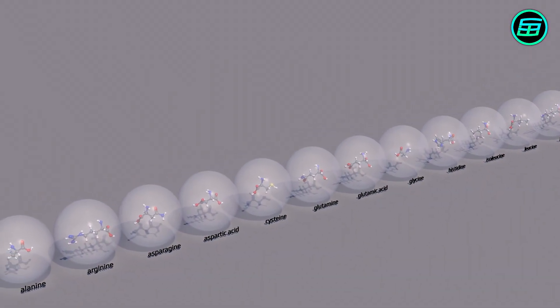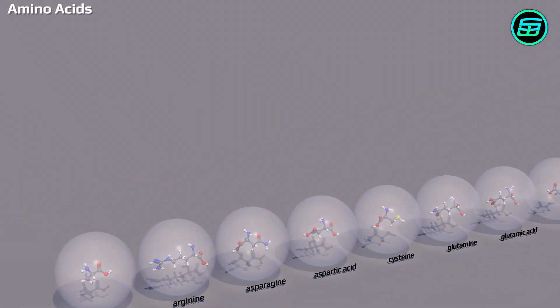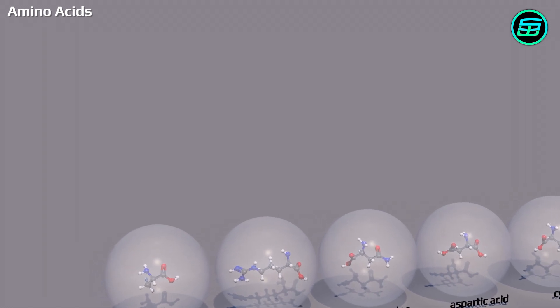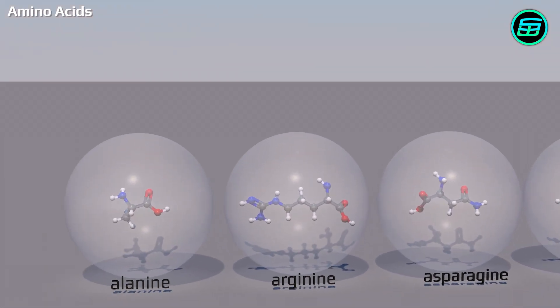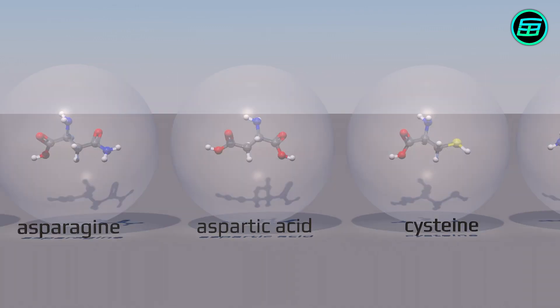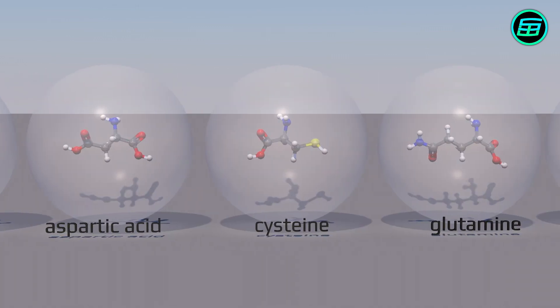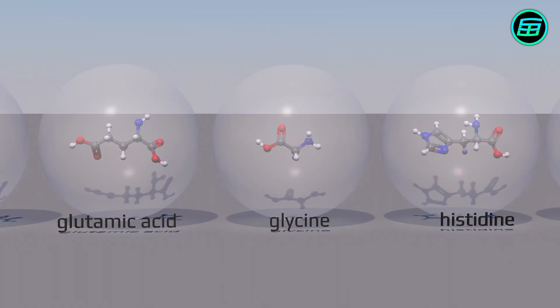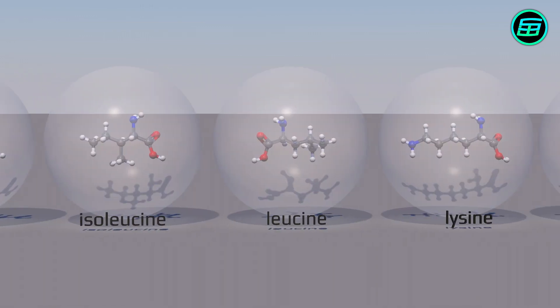Proteins are made from amino acids. Although there are hundreds of different amino acids in nature, the proteins in our bodies are made from just 20 of them. With the different ordering of these 20 amino acids, all the proteins in living cells are formed.